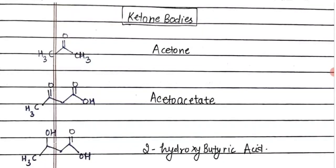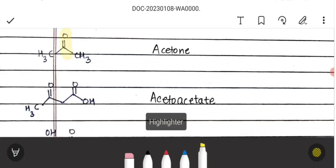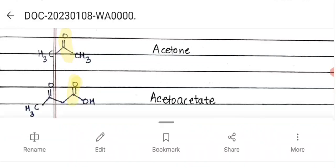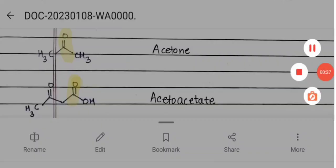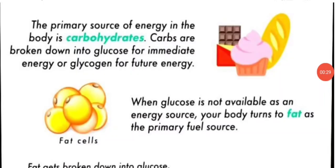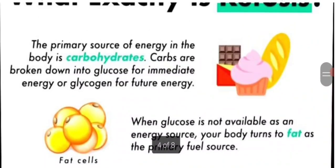Hello everyone. In this video we are going to discuss ketone bodies. There are three types: acetoacetate, beta-hydroxybutyric acid, and acetone. They are called ketone bodies because they have a ketone group. Normally, our body uses carbohydrates as the source of energy — glucose is used as a fuel for ATP production.